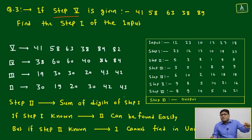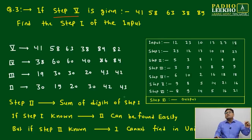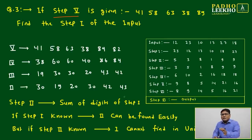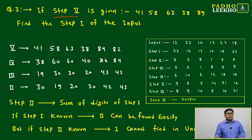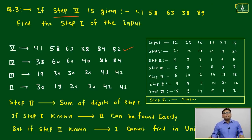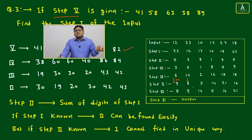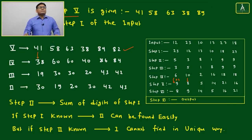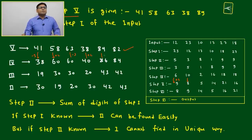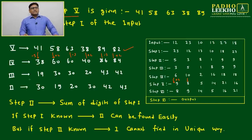You are doing the same mathematical transformations but in reverse order. For example, Step 5 output is given as 41, 58, 63, 38, 89, 82. Going back to Step 4: wherever there was addition, now do subtraction, and vice versa. So we apply -3 and +2 alternately to get Step 4.